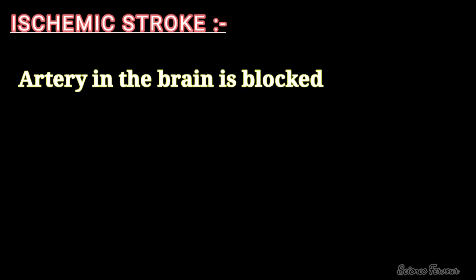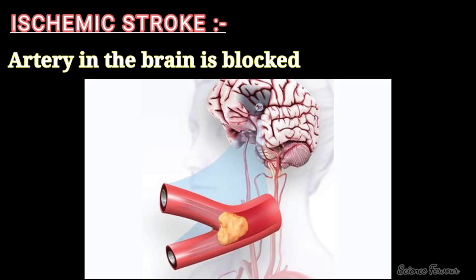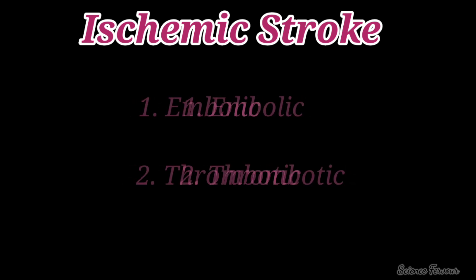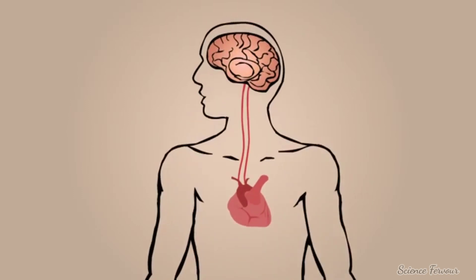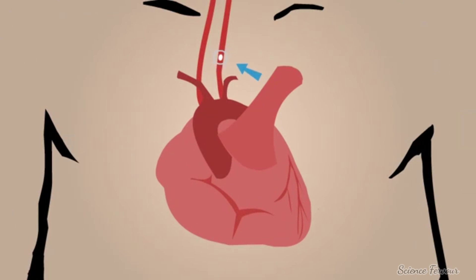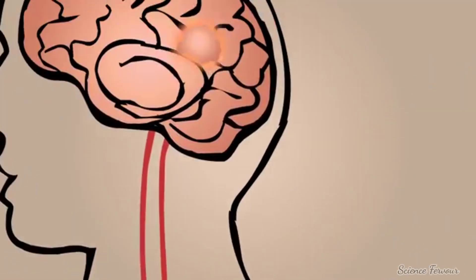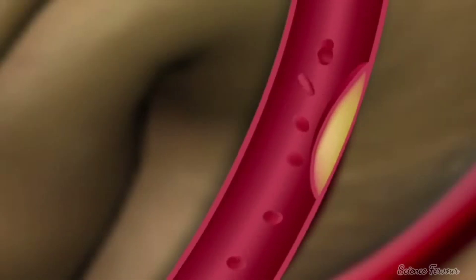Ischemic stroke is the most common type of stroke and happens when an artery in the brain is blocked. There are two types: embolic and thrombotic stroke. In embolic stroke, a blood clot forms usually in other parts of the body, especially the heart or the large arteries leading to the brain, and then moves through the arteries to the brain, blocking a blood vessel and leading to a stroke. In thrombotic stroke, a blood clot called a thrombus blocks the blood flow to parts of the brain.